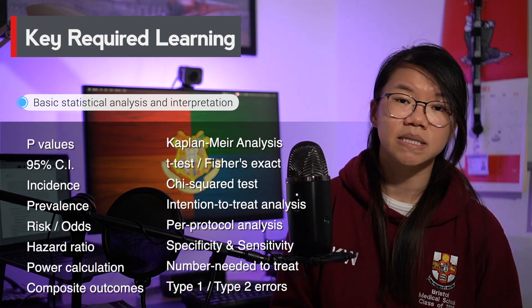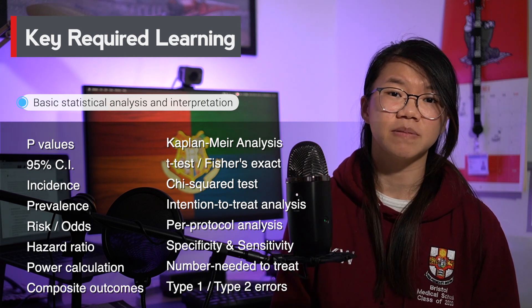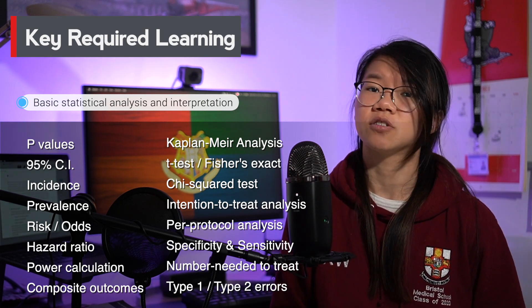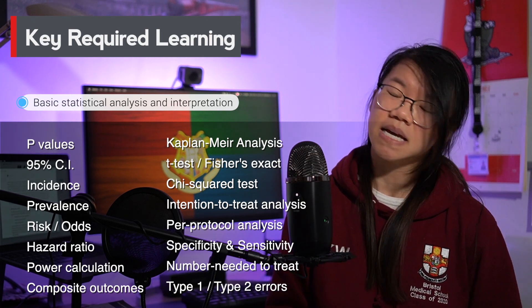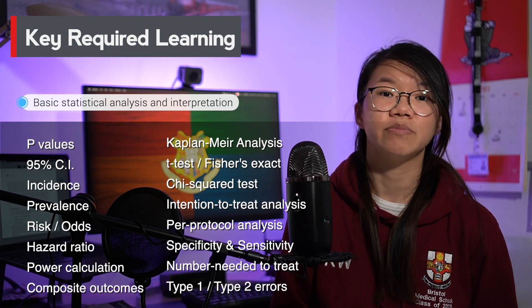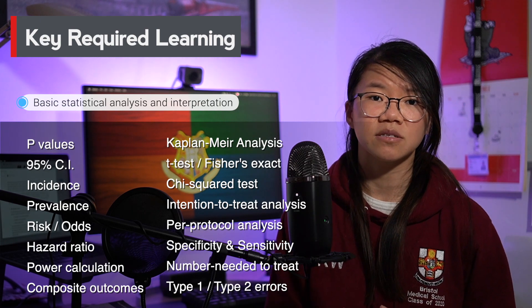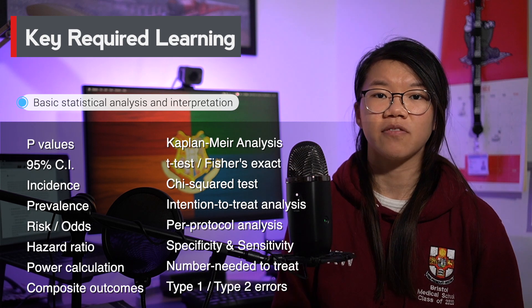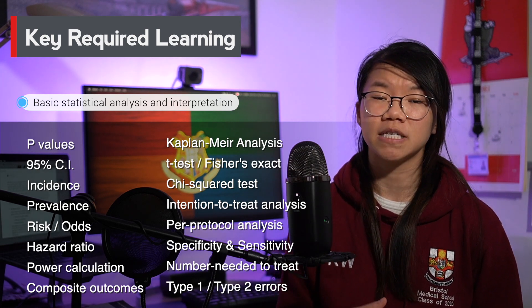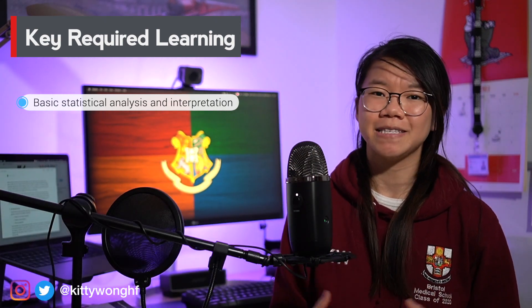Knowing your basic statistical terms is also really important for the academic critical appraisal. Whilst you may not need to know exactly how to use statistical software or really niche complicated calculations, you need to know enough basic statistics to be able to interpret results and whether they're significant or not. You need to understand key terms like power calculation, hazard ratios, p-values, and 95% confidence intervals, as well as common methods of statistical analysis such as the t-test, Fisher's exact test, chi-squared test, and Kaplan-Meier analysis. You also need to know about statistical errors such as type 1 and type 2 errors.